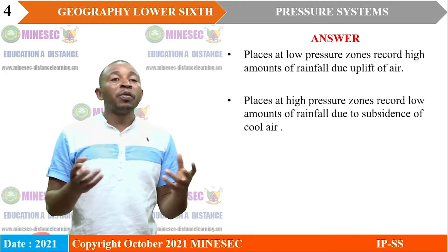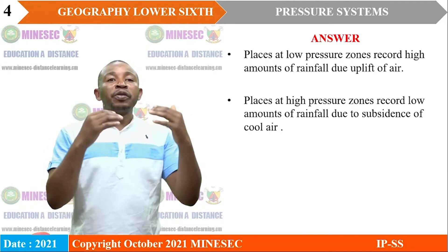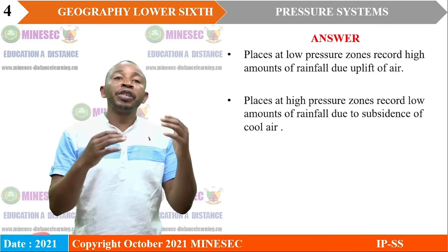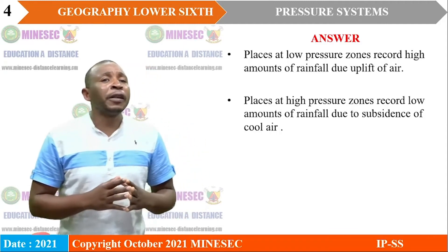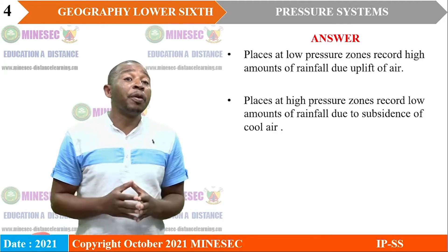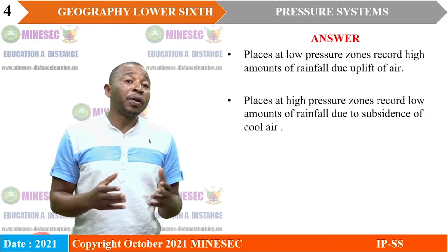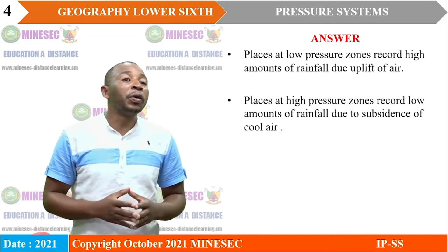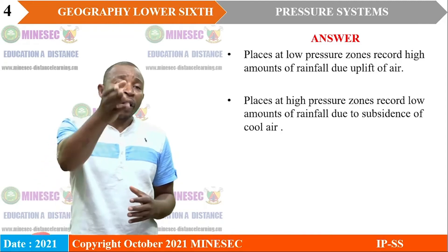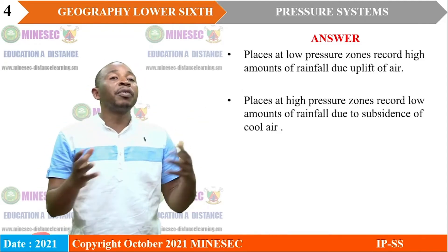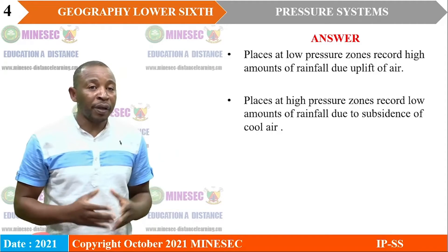This is because as warm, moist air ascends, it reaches the dew point and condensation occurs, so rain starts falling in these areas. Places at high pressure zones tend to record low amounts of rainfall due to subsidence. In the course of our lessons, we are going to see the details on how the process takes place and how the rain begins.